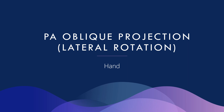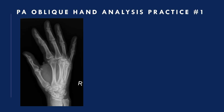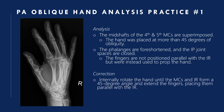PA oblique projection — lateral rotation of the hand: here are examples of proper positioning and the proper projection. Analysis practice one: the mid-shafts of the fourth and fifth metacarpals are superimposed — the hand was placed at more than 45 degrees of obliquity. The phalanges are foreshortened, IP joint spaces are closed, and the fingers were used to prop up the hand instead of being parallel with the IR. Correction: internally rotate the hand until the metacarpals and IR form a 45-degree angle, then extend the fingers parallel with the IR.